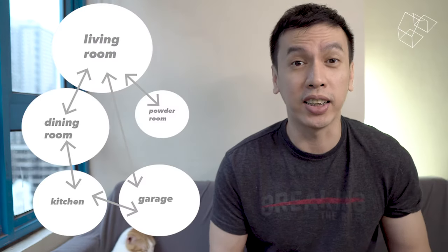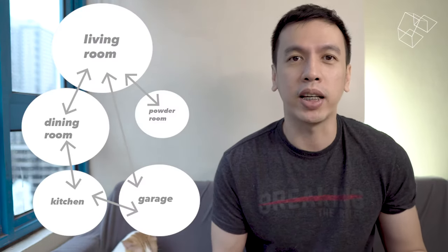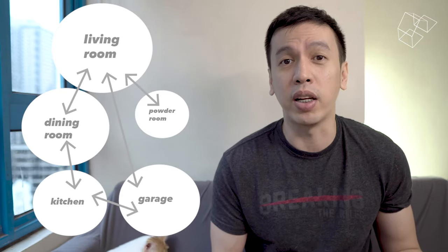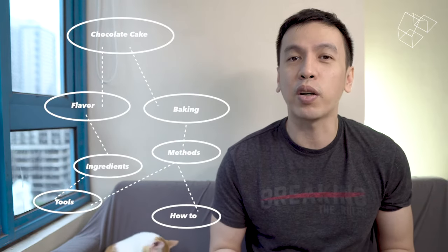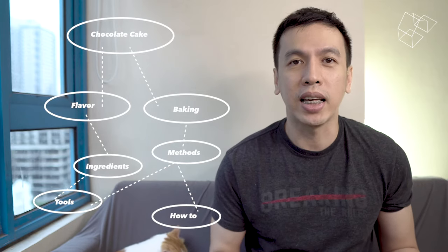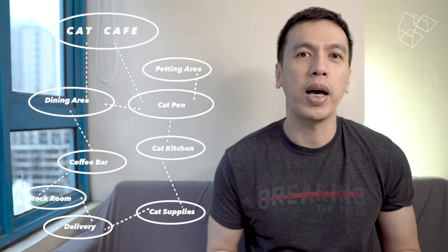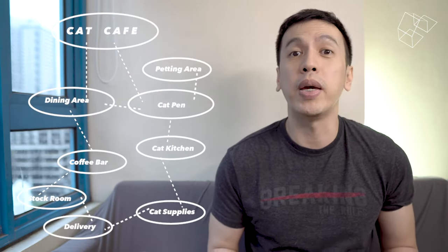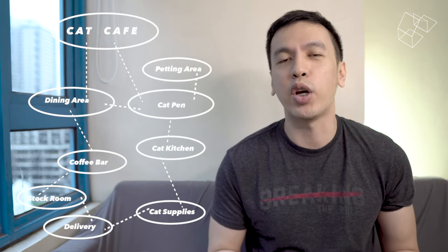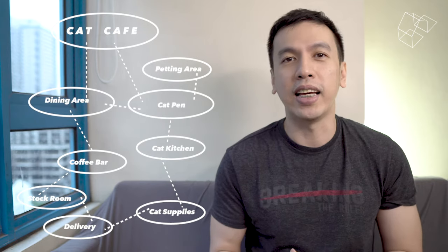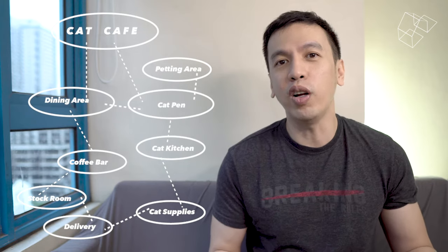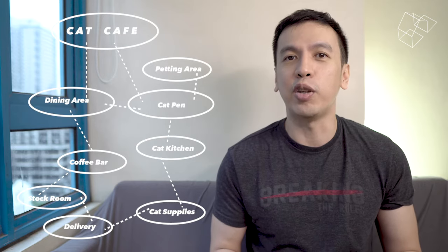Bubble diagrams help us understand the relationship of spaces and their adjacencies. The bubble represents the space itself — it can be a living room, a kitchen, or a toilet. Try to treat bubble diagrams like mind maps, which are ideas that are connected. It's the same with spaces in a plan — imagine an architectural project as a big idea, and within it are smaller ideas: the idea for sleeping, the idea for eating, the idea for watching TV.